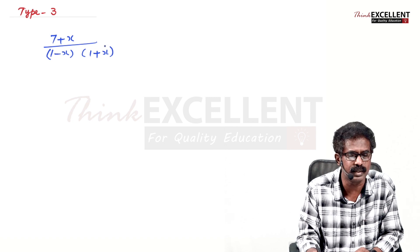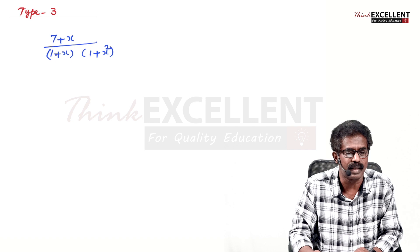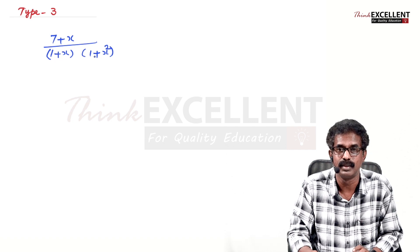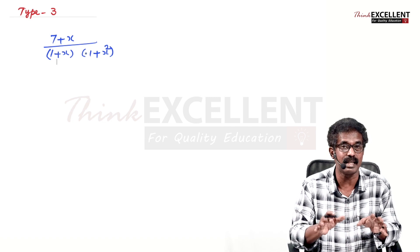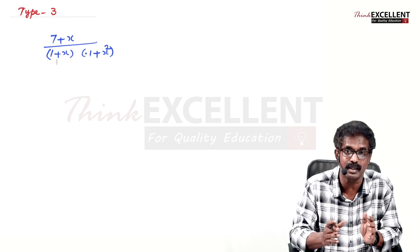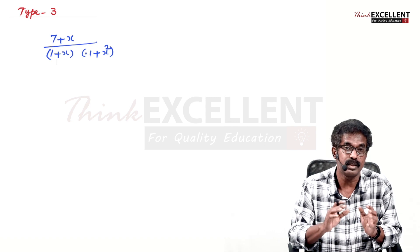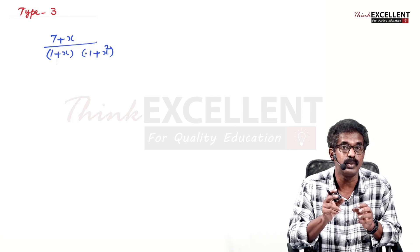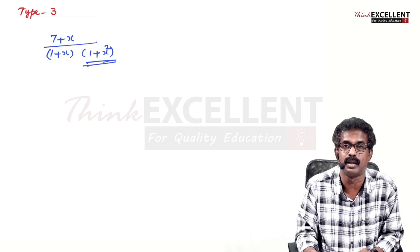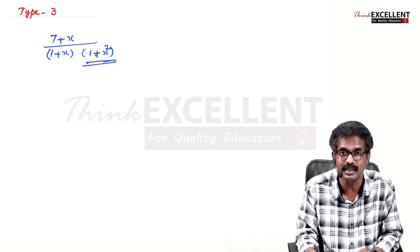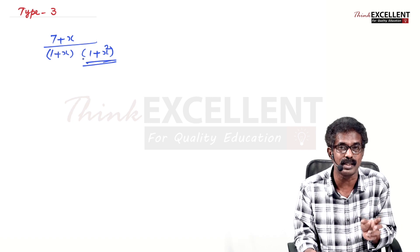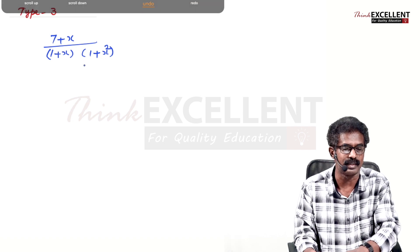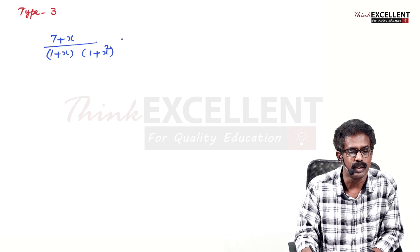Suppose the question is (7+x) / [(1+x)(1+x²)]. The first factor is linear and the second is quadratic - you cannot factorize that. It is not the whole square either. If the sign between terms were minus, you could factorize using a²-b² = (a+b)(a-b), but here you cannot factorize. So this is of the third type.